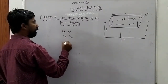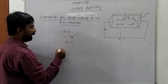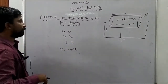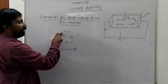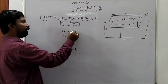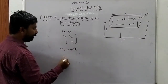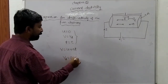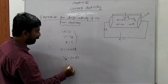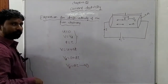The velocity gained by the free electrons after the relaxation time τ is given by v = u + at, where t = τ. Initially there is no electric field applied, so the average velocity u = 0. Substituting all values: vd = 0 + a·τ, therefore vd = aτ. This is equation number one.